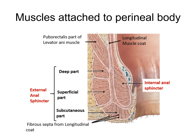This is the coronal section of the anal canal. Like elsewhere in the GI tract, the anal canal has an inner circular muscle coat and an outer longitudinal muscle coat in the muscularis externa. The longitudinal muscle coat continues upward as the longitudinal muscle coat of the rectum, and a few fibers of this interlace with the perineal body.